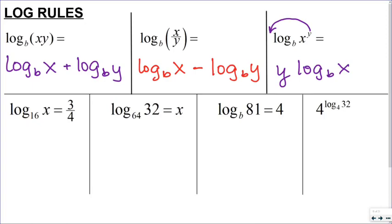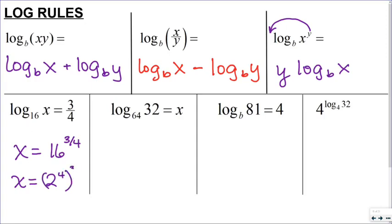So let's apply these rules to solve a few log problems. First, if I'm solving for x and log base 16 of x equals three-fourths, I'm going to change this into exponential form to get x out of the log. This becomes x equals 16 to the three-fourths. Now I can write 16 in its lowest base form, which is 2 to the 4th. When I multiply those exponents, I get x equals 2 cubed, or 8.